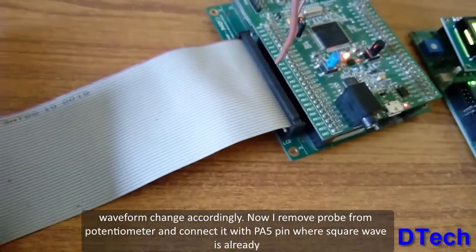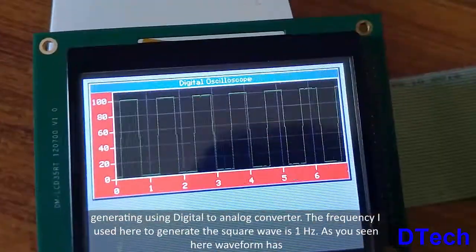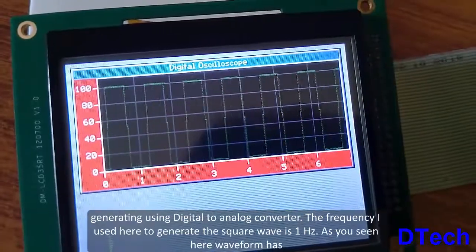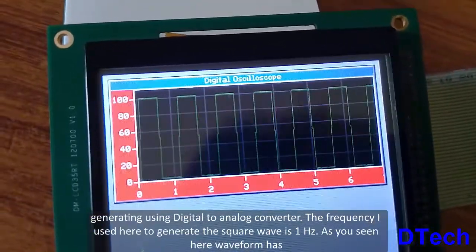In the PF5 pin, where the square wave has already been generated using the digital to analog converter. The frequency I use here to generate the square wave is 1 Hz.